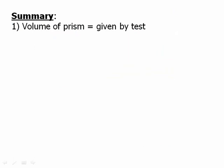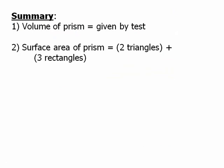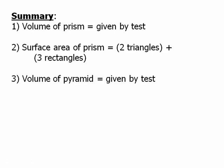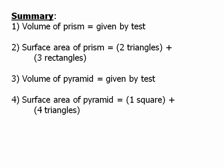To summarize: the volume of a prism will most likely be given on the test — you won't need to memorize it. The surface area of a prism consists of the two triangle ends and the three rectangles. The volume formula for a pyramid will also most likely be given. The surface area of the pyramid is the one square base plus the four triangles.